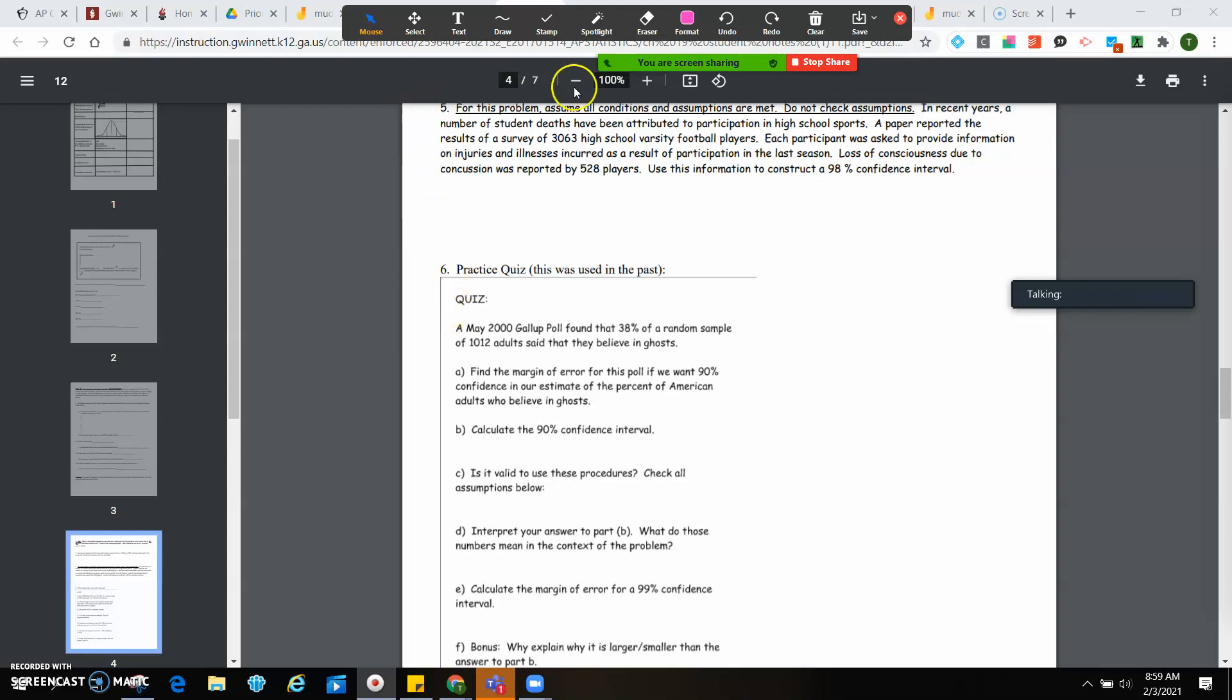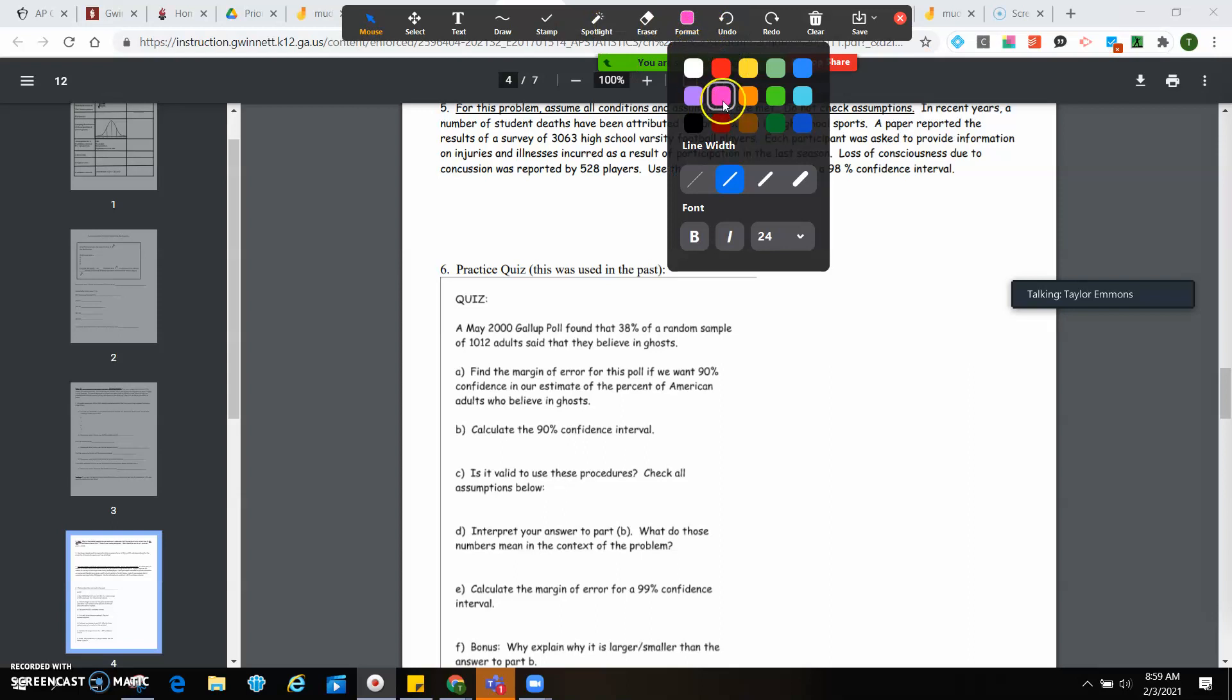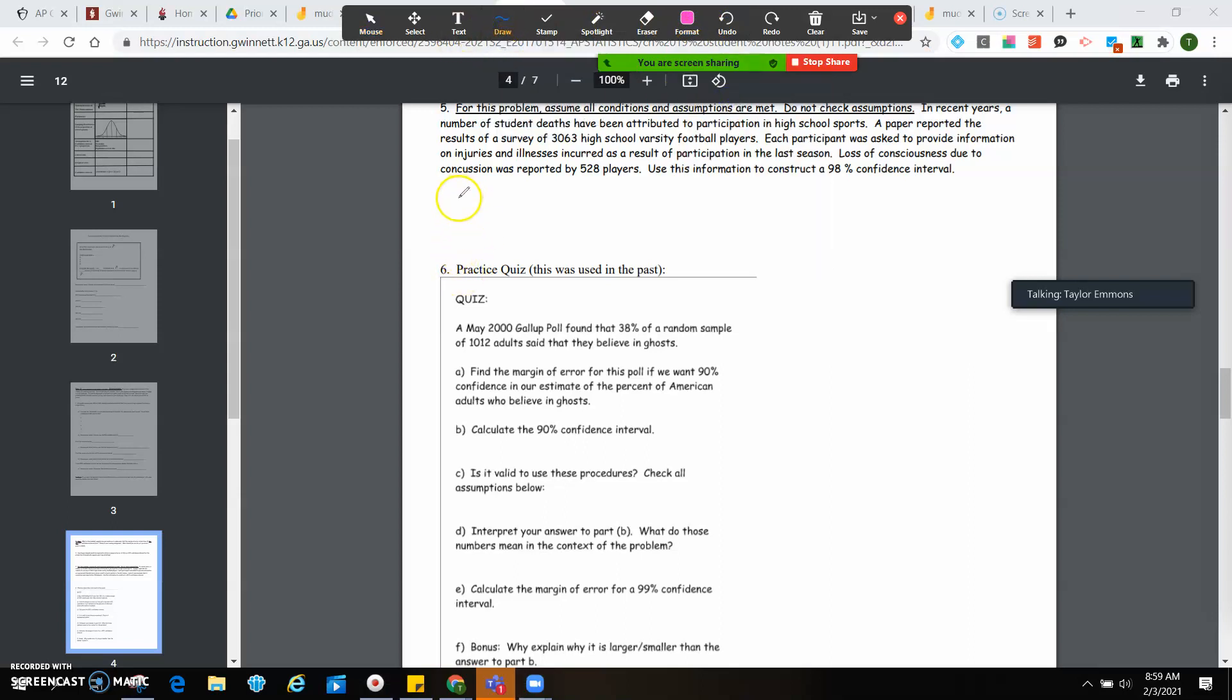Okay, so what you're going to do first on here is you need to know what P hat is. So P hat is going to be how many people said hey, got a concussion, right? Lost consciousness because of a concussion out of the total number of people. So we did 528 divided by 3,063. And so that gives you 0.1724.